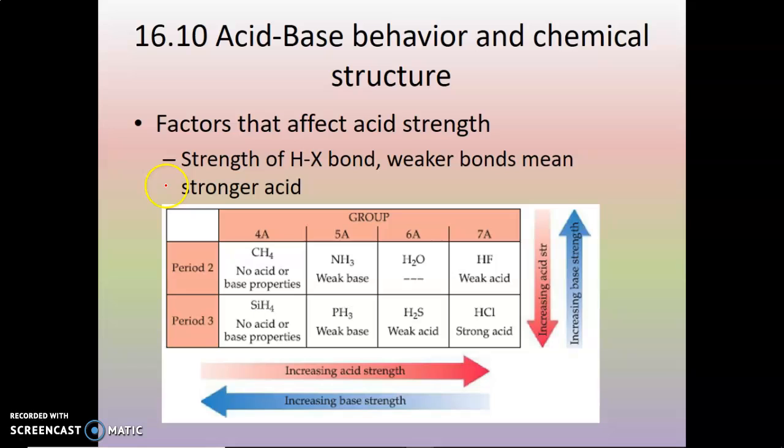So the acid-base behavior is really dependent upon the structure of your acid or your base. And so if you look at the group and when it's bonded with hydrogen, you have different options. So if you're looking at the fourth column where carbon is, CH4 has no acidic or basic properties. CH4 is totally neutral. It is not an acid or base. Then you go to the next column over, you have ammonia and ammonia is a weak base.